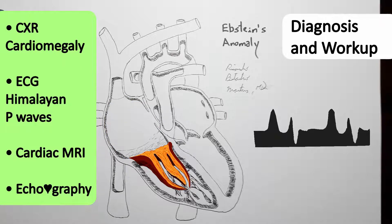And while magnetic resonance imaging of the heart may be useful, the gold standard for diagnosis is Doppler echocardiography. Aside from demonstrating the tricuspid regurgitation and the displacement of the leaflets,